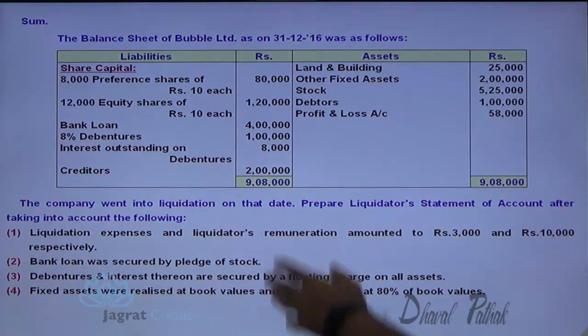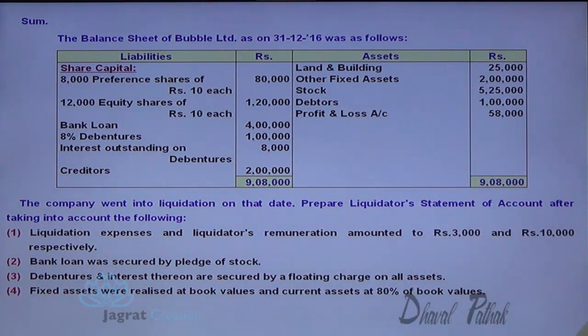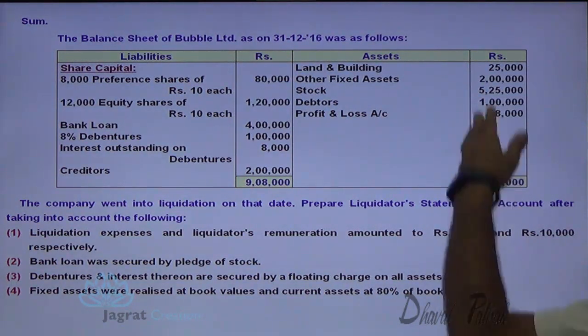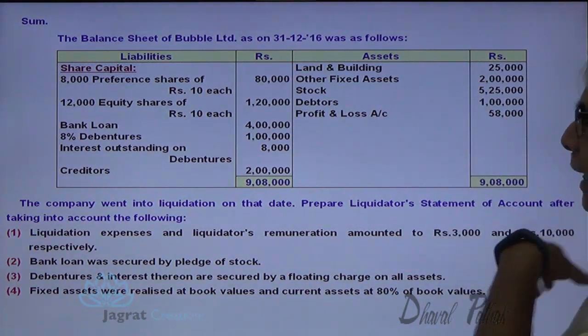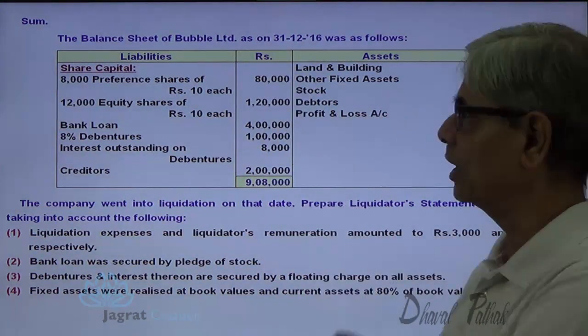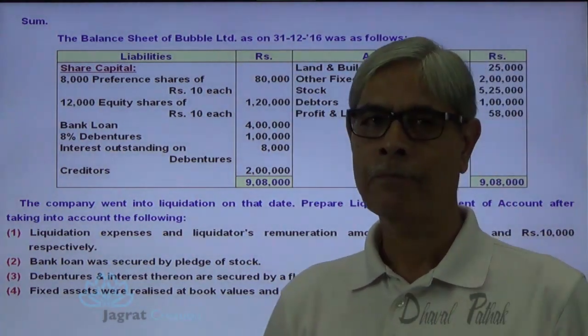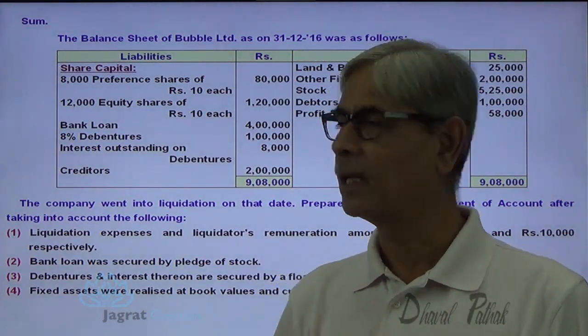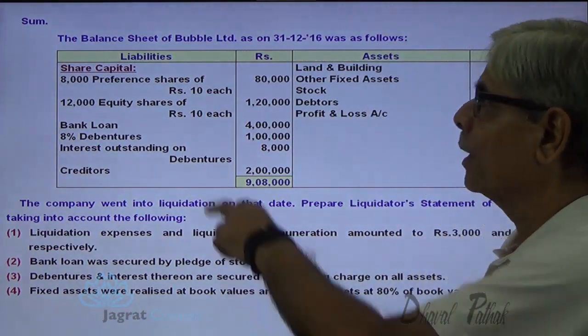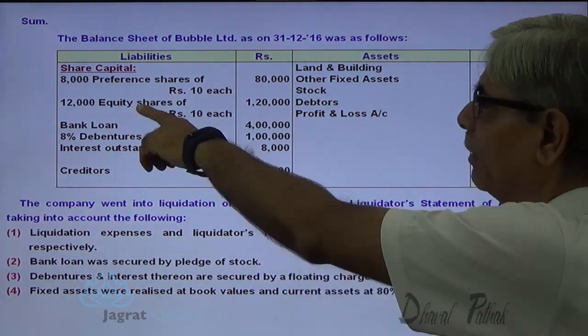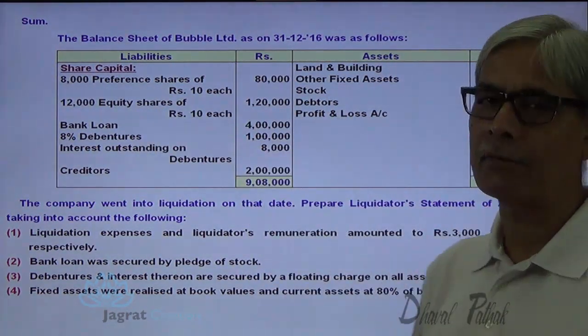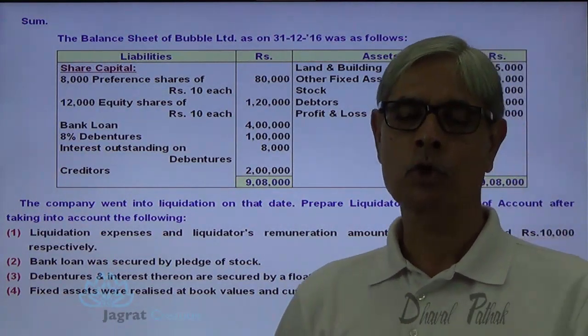The balance sheet of Bubble Limited as on 31st December 2016 was as follows. 9,000 is the total of assets and liabilities. Preference share capital fully paid up and equity share capital are also fully paid up.